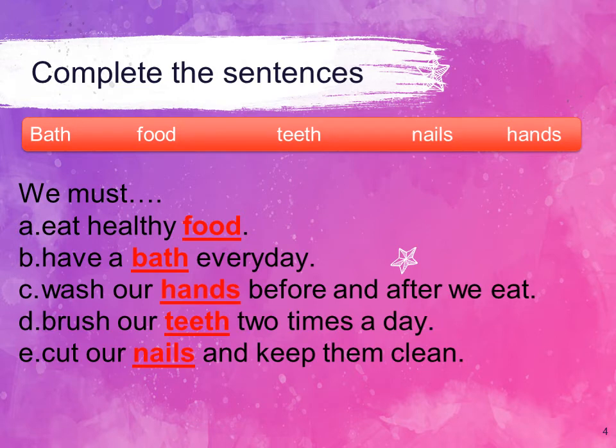The next exercise is complete the sentences. Here you have been given a help box. You have to choose words from the help box. We must eat healthy dash — the answer is: we must eat healthy food. Next is have a dash everyday — we must have a bath everyday, so the answer is bath: we must have a bath everyday.